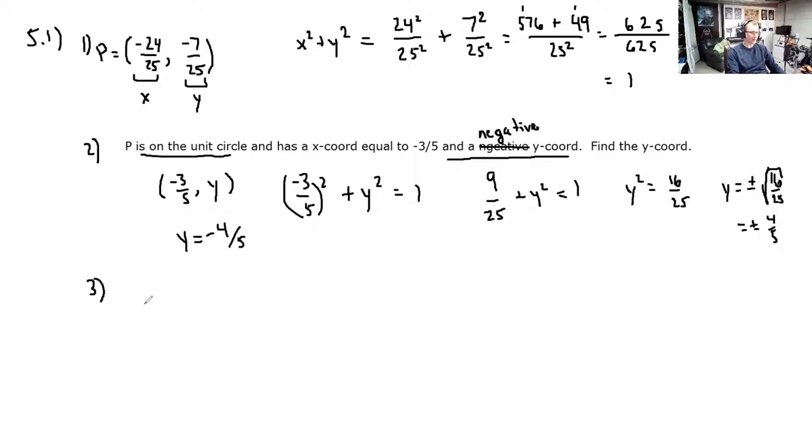Question 3. Find the reference number slash angle for the angle t equals 41 pi over 4. Okay. That's a big angle, right? We can think of this angle like so. It's 40 pi over 4 plus pi over 4. Right? That's 41 pi over 4. This is a good way of thinking about it.